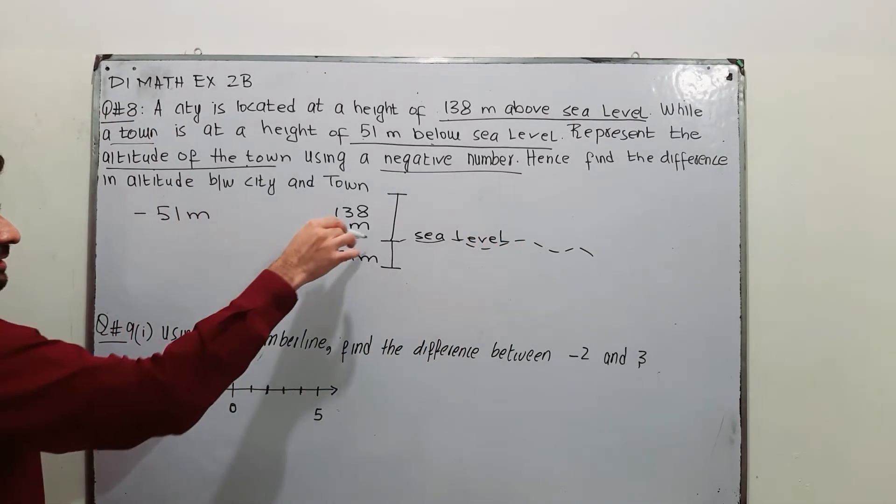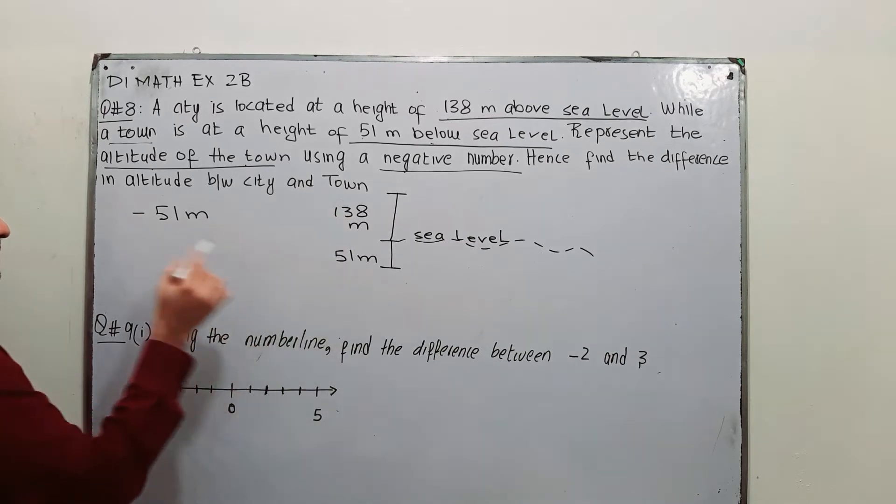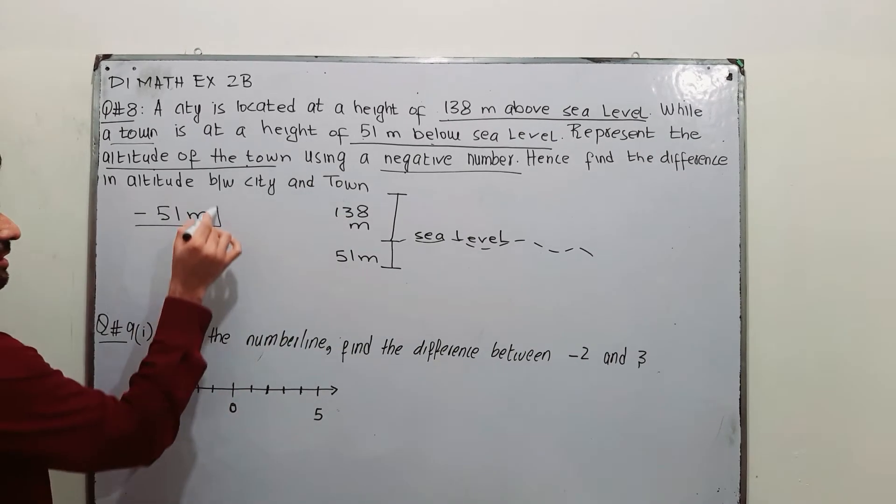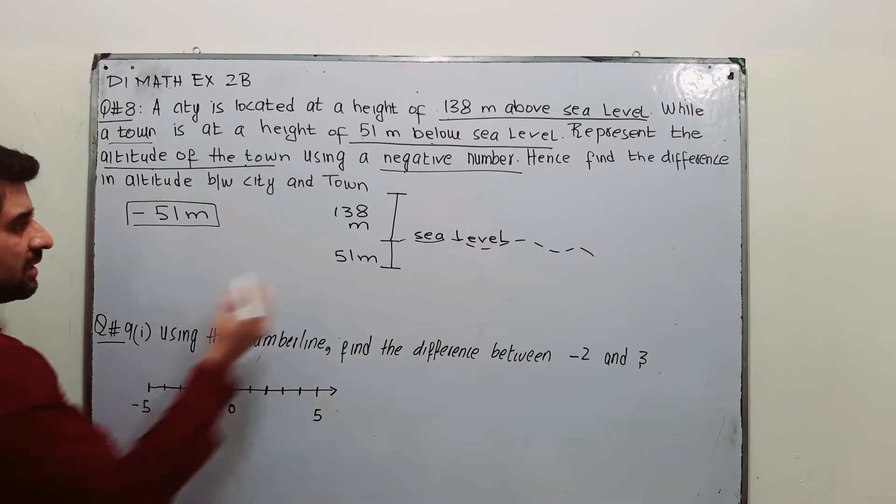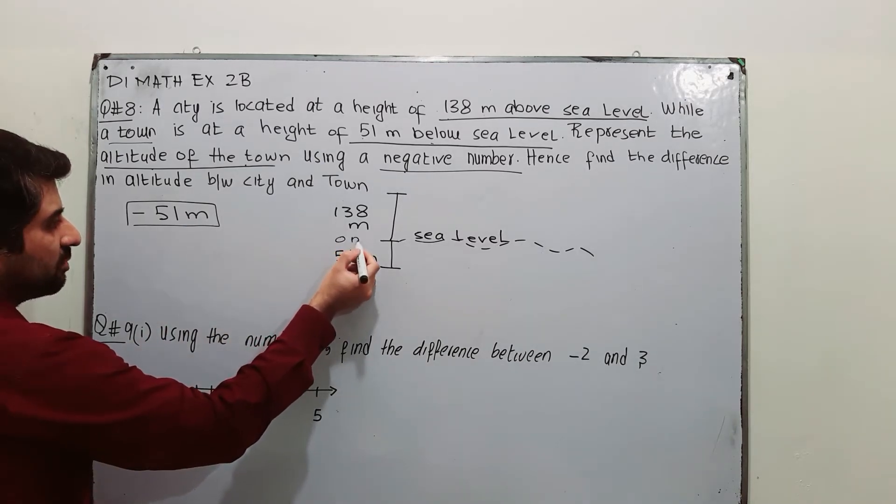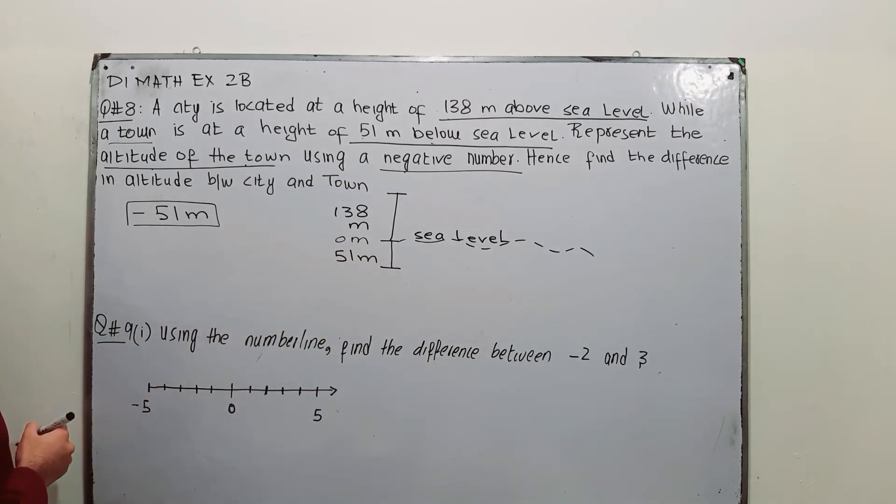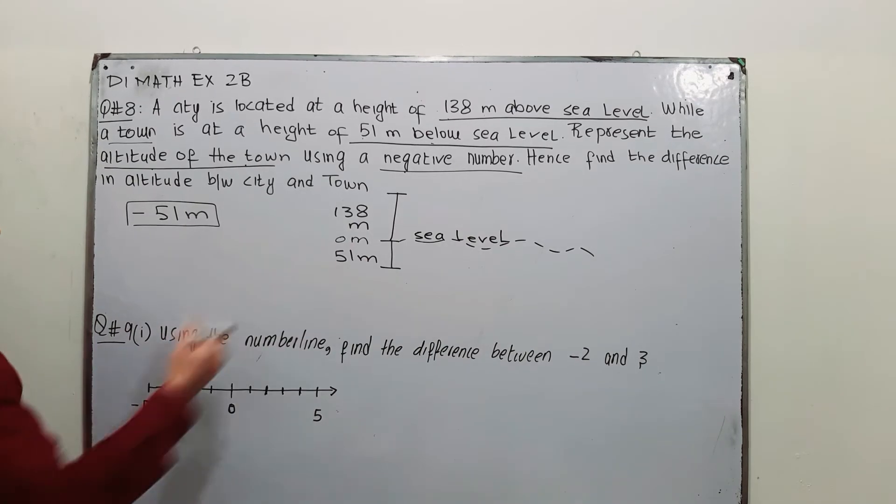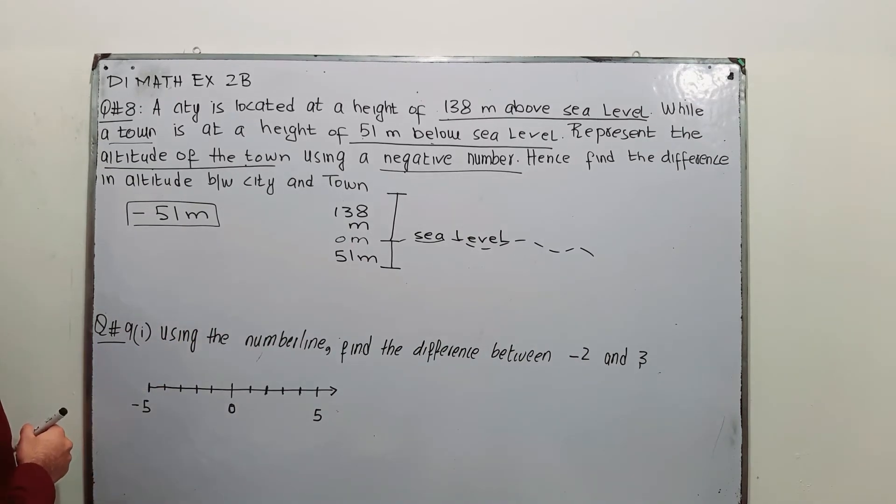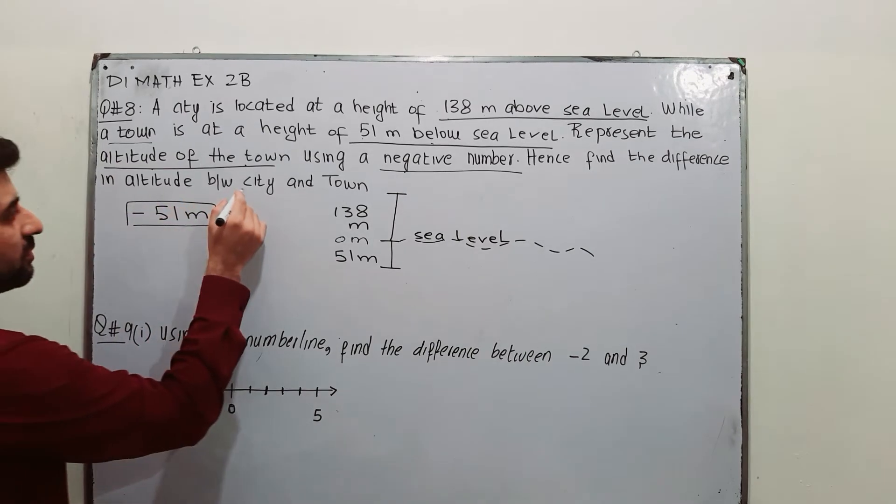So when it is below the sea level, you measure it with a negative number. Here you have 0 meters at sea level, altitude is 0. Now find the difference in altitude between city and town.